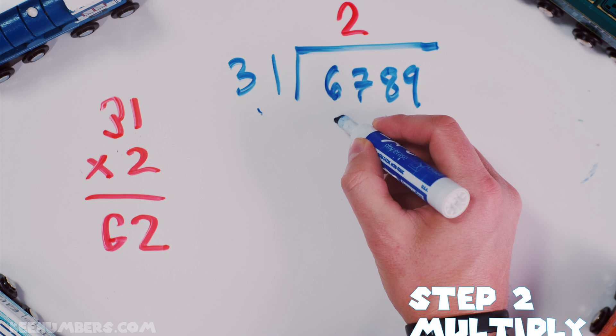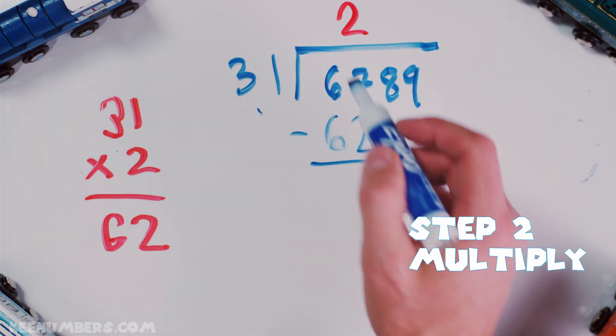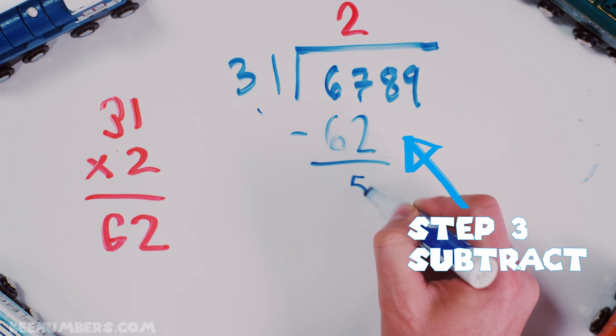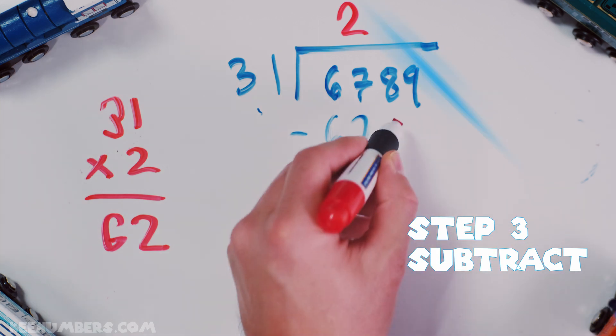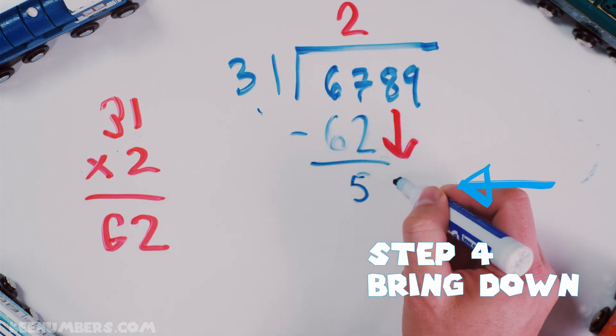Step 2, multiply. We get 62 as we already discussed. And you're gonna subtract. Step 3, subtract. What's left over? 5. And then, step 4. Pull down. Bring down that 8.